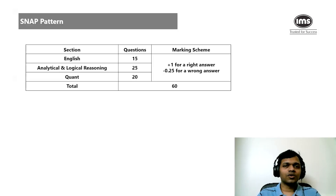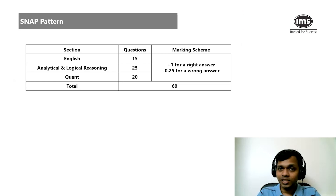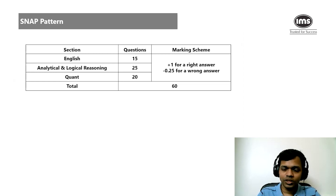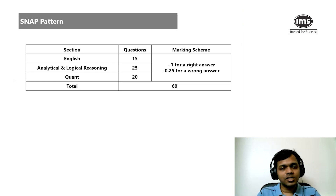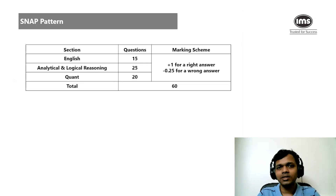The first thing I'm going to focus on is the paper pattern. As everybody is aware, the paper pattern is very straightforward. You have 60 questions to be attempted in 60 minutes — 15 questions in the English section, 25 in the logic section, and 20 in the quant section. There is negative marking: plus one for every right answer and minus 0.25, so one-fourth negative marking.